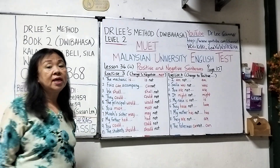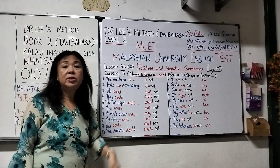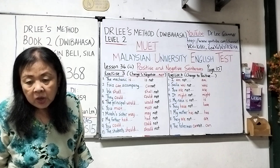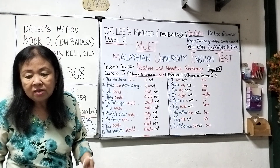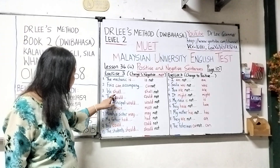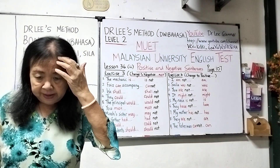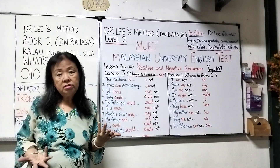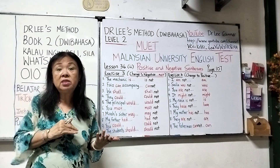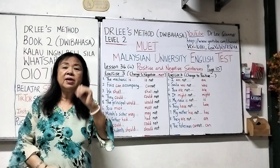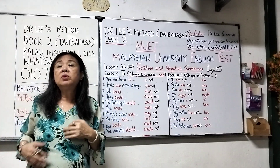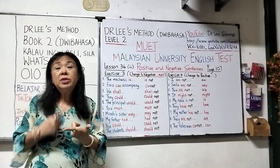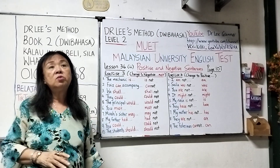Number three: 'We shall go to your house to discuss our homework.' Change to the negative — 'shall' becomes 'shall not.' Answer: 'We shall not go to your house to discuss our homework.' Number four: 'They could carry that big box to the store room.' Change to the negative — 'could not.' Just put 'not' behind the modal verb. Answer: 'They could not carry the big box to the store room.' Number five: 'The principal would listen to the student's explanation.' Change to the negative — put 'not' behind 'would.' Answer: 'The principal would not listen to the student's explanation.'